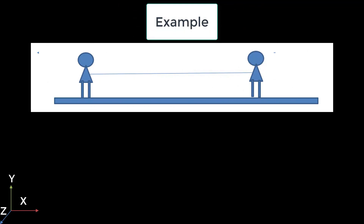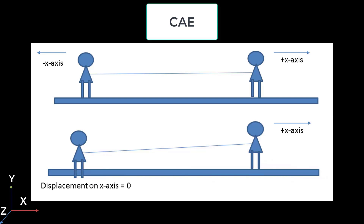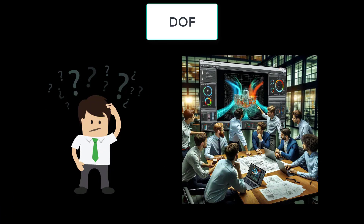Let's take an example. Imagine two people standing on the ground pulling a rope. To ensure zero displacement along the x-axis, two people would have to exert equal and opposite forces onto the rope. This action-reaction principle keeps the system in equilibrium, resulting in no net movement. In CAE simulations, we achieve zero displacement by simply setting the translation along the x-axis to zero. This boundary condition allows us to analyze the stresses and deformations in the rope, providing valuable insights into the behavior of the material under specific loads and constraints.